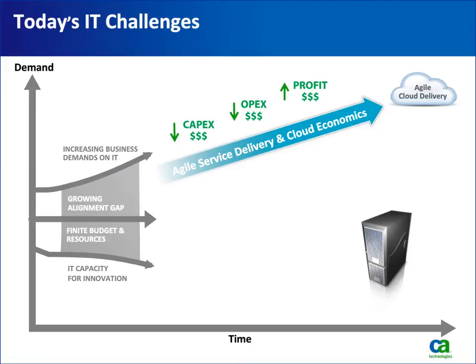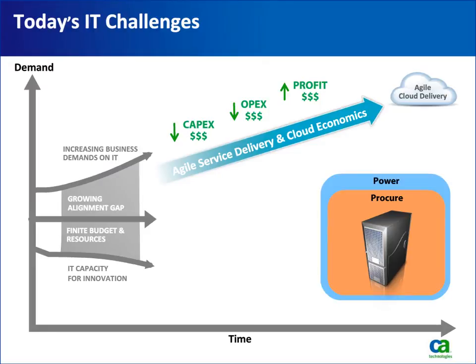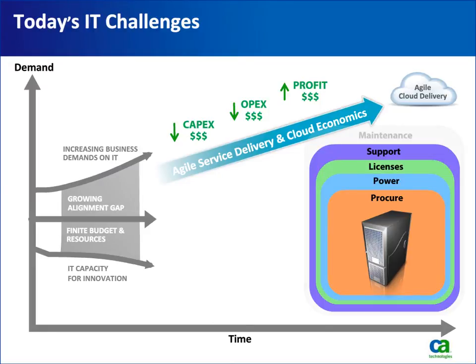Identify one server that has either been over-provisioned or can be removed from production because it sits idle. I'm sure we can all think of many servers that fit this scenario. Now think about how much money it costs to procure that server — there's some cost savings right there. And what about the cost of powering that server, licensing the hardware and software on that server, and the support and maintenance costs? We've just identified a way to reduce costs with just one server.